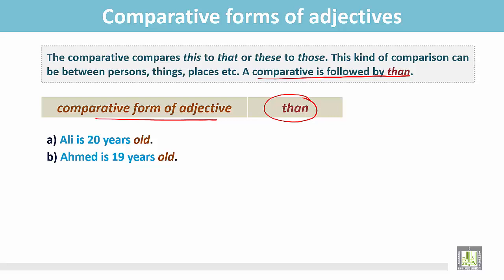In these two sentences, the subjects are of different ages. One is 20, another is 19. Ali is older. Here we use the comparative form of the adjective. This is older.